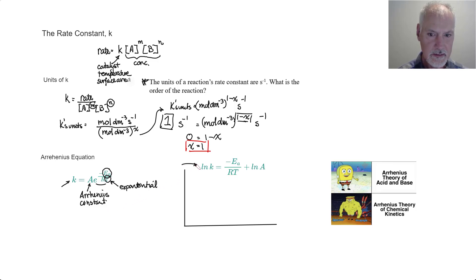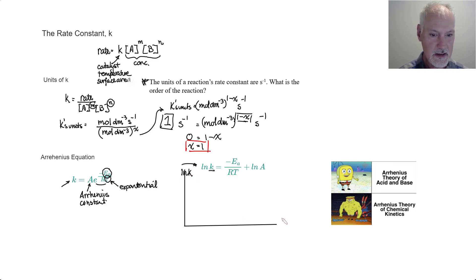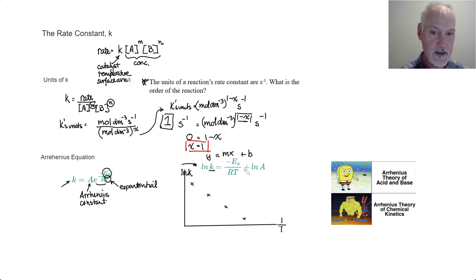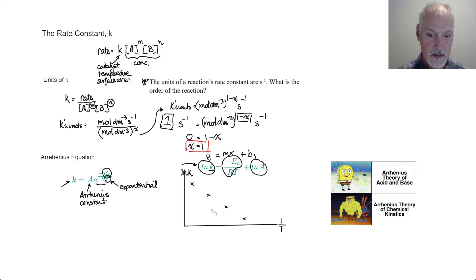That expression is in our IB data booklet, but also is this second linearized form. What this shows is that if one conducts a series of experiments measuring k at different temperatures, and plots the ln of k on the y-axis against one over the temperature on the x-axis, you generate a straight line. This equation is of the form y = mx + b, where y equals ln(k), the slope m is this portion of the expression, and the intercept b corresponds to ln(A).